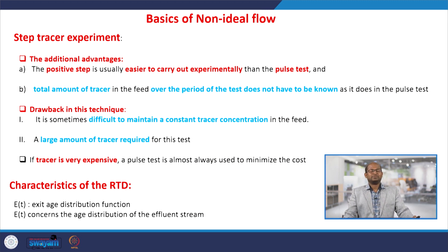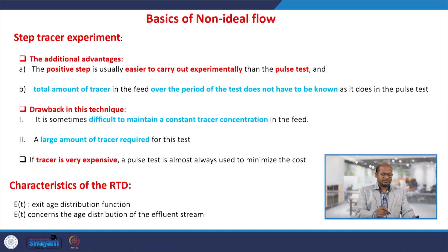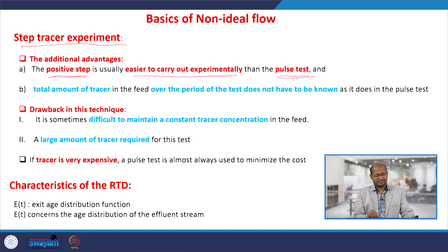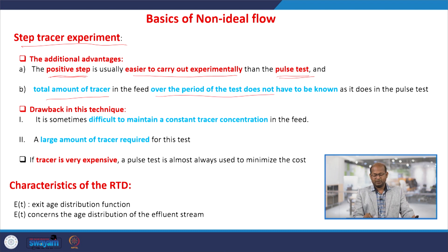In the step tracer experiment, there are some advantages and disadvantages. A positive step is usually easier to carry out experimentally than the pulse test. Also, the total amount of the tracer in the feed over the period of the test does not have to be known, as it does in the pulse test.